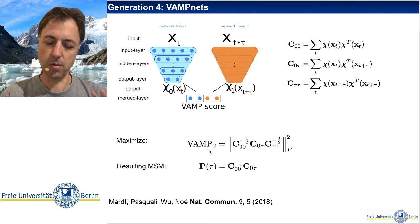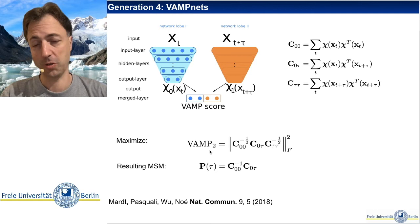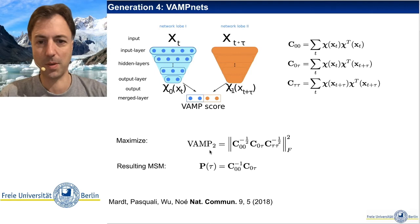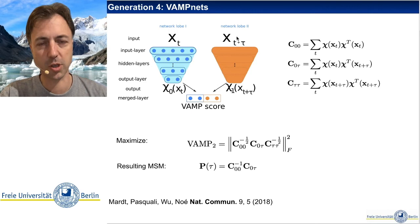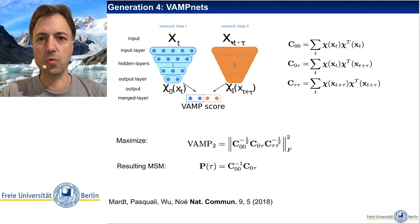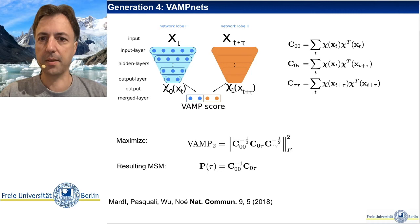Both variational principles create a loss function or score function — an optimization objective. Crucially, we are not limited to linear models or Markov state models; we can now use deep learning. The approach is: take simulation steps x_t and x_{t+tau} as inputs to two neural networks — possibly identical clones or two different networks. Each network maps the high-dimensional input to a generally lower-dimensional representation of the dynamical system.